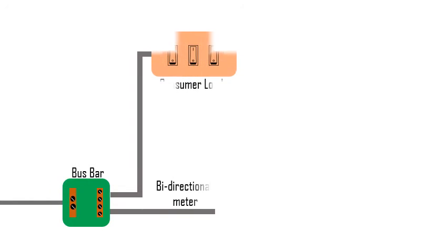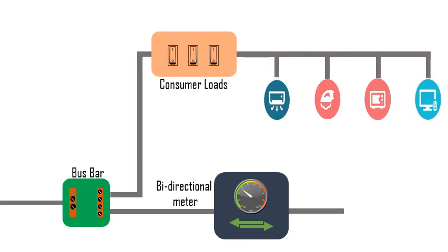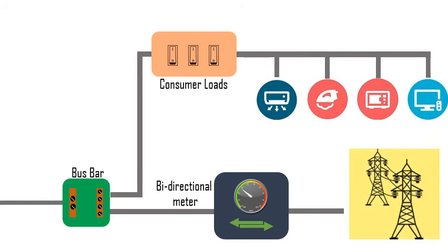The AC electricity from the inverter is connected to the bus bar, which has two outputs: one to the consumer loads which connect to the household appliances, and the other to the bi-directional meter which is connected to the power grid utility.